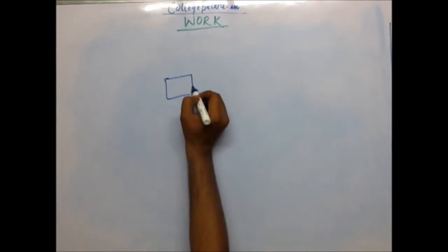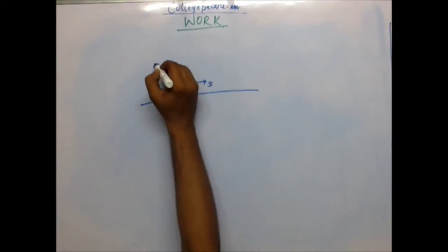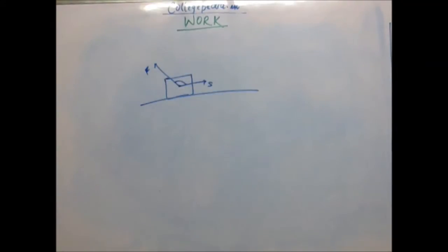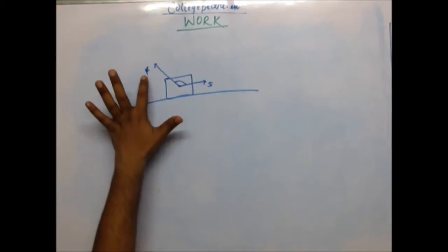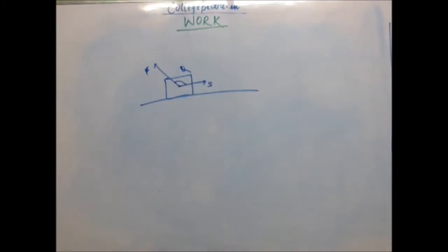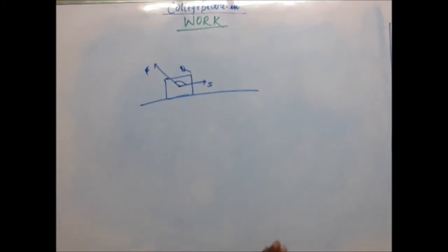Suppose we consider the same block kept on a plane, but we are applying force at an angle greater than 90 degrees to the displacement. The displacement is to its right, maybe because of some velocity it already has from some other force. You are applying force in this direction, so this angle theta is an obtuse angle, but the body continues to move to its right — the displacement is still to its right.